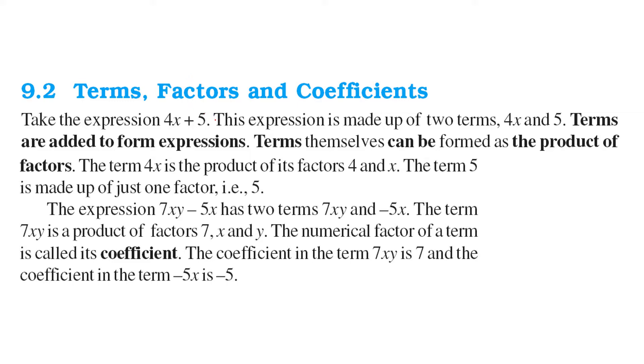Terms, coefficient and factors. In this 4x plus 5, this expression is made up of what? First of all, we have two terms: 4x and this 5. They are combined with an operator. These terms are added to form an expression actually.